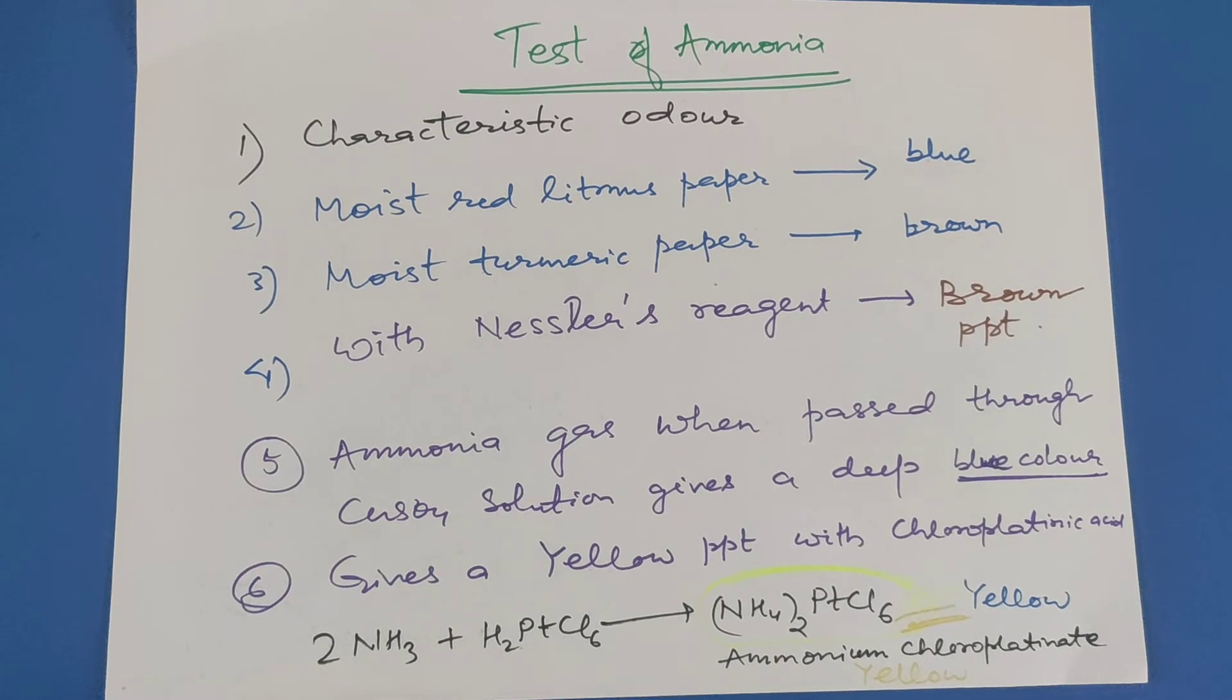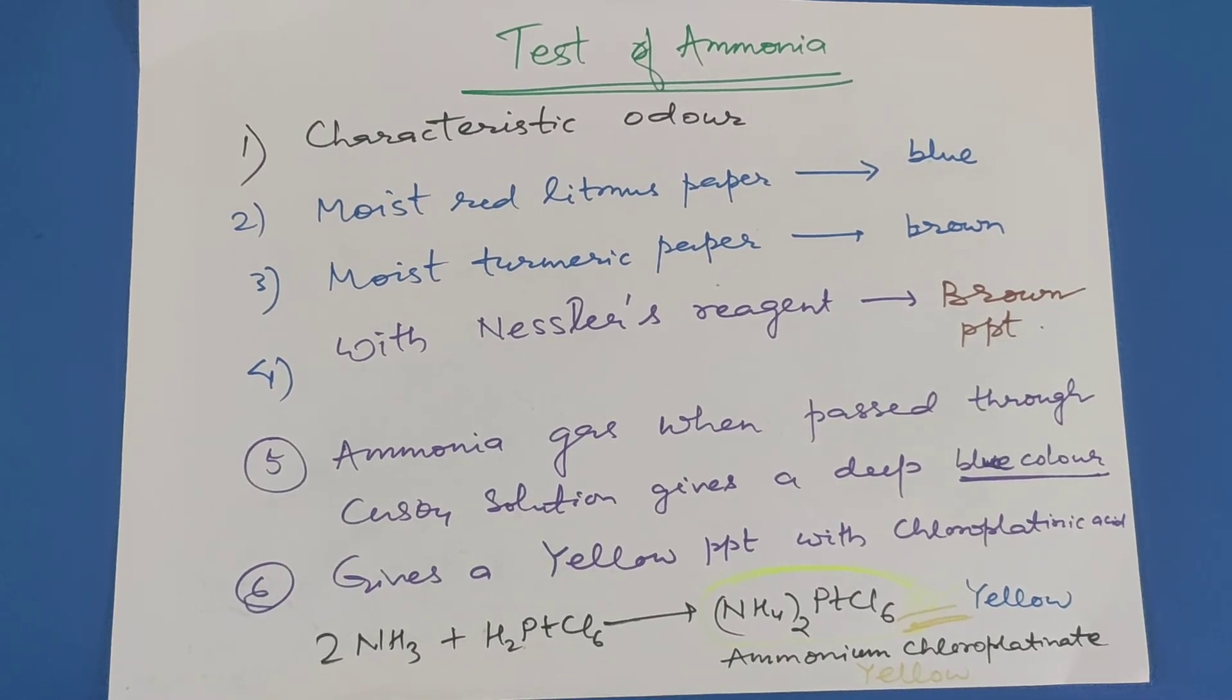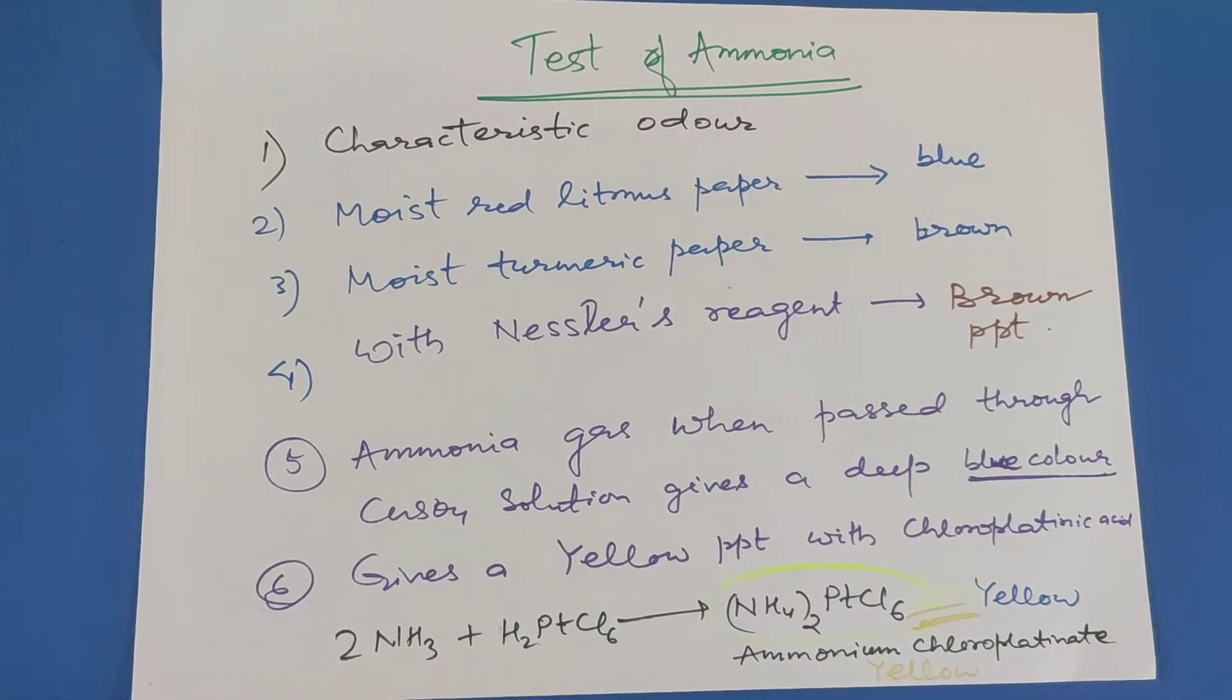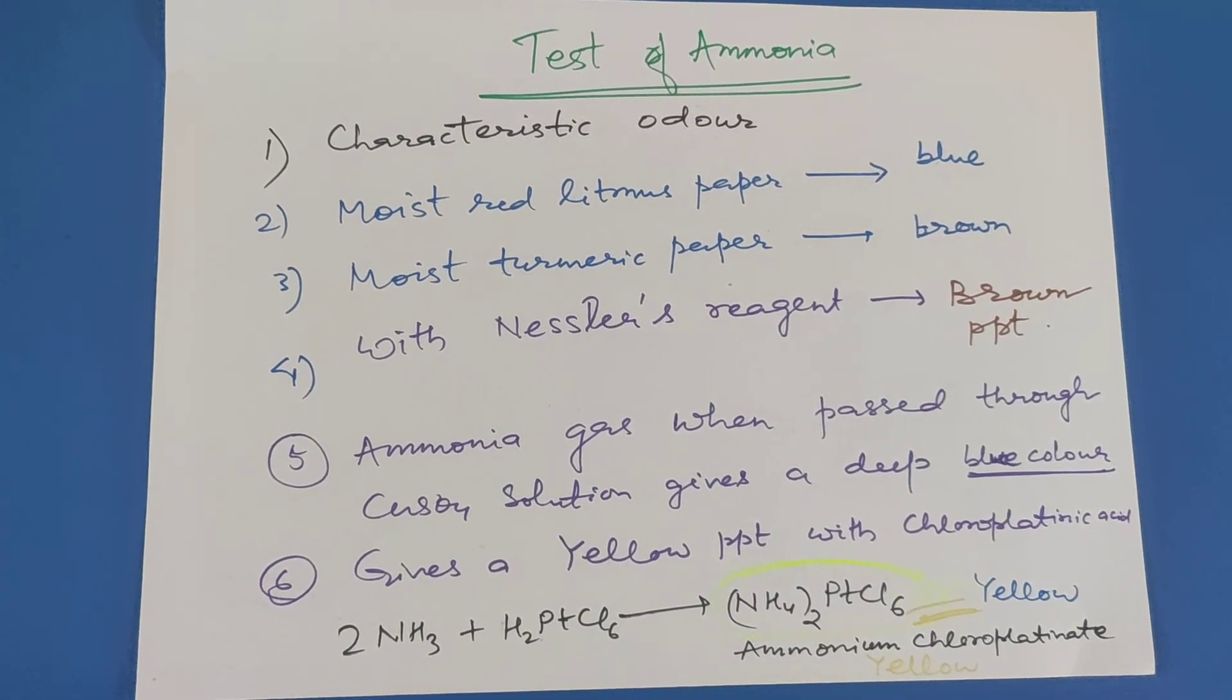Ammonia gas when passed through copper sulfate solution, that is blue copper sulfate solution, gives a deep blue color. It gives a yellow precipitate with chloroplatinic acid.